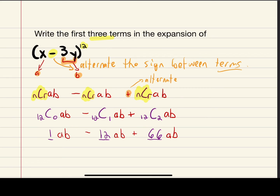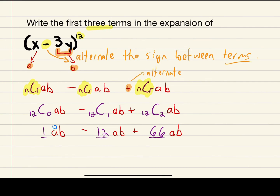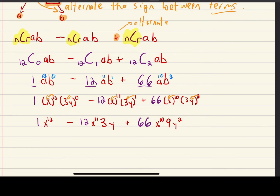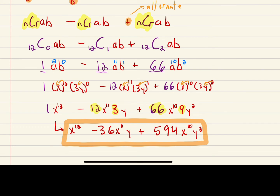Now we put the appropriate exponents on each term: a starts at 12 and b at 0, then a goes to 11 and b to 1, then a goes to 10 and b to 2. Substituting x for a and 3y for b, and applying the exponent inside the brackets, then multiplying the coefficients together, we get the final result: x^12 − 36x^11·y + 594x^10·y^2.